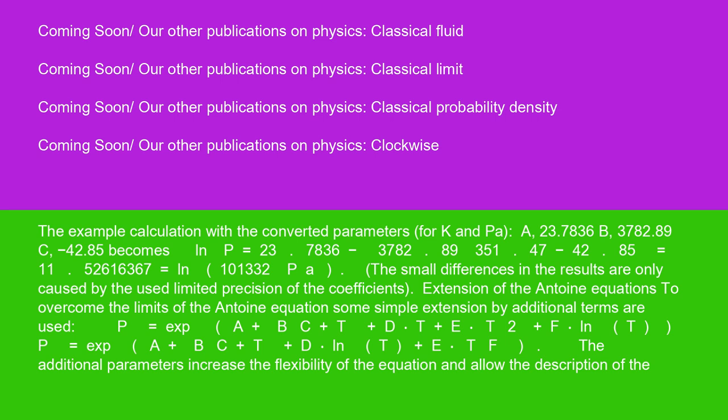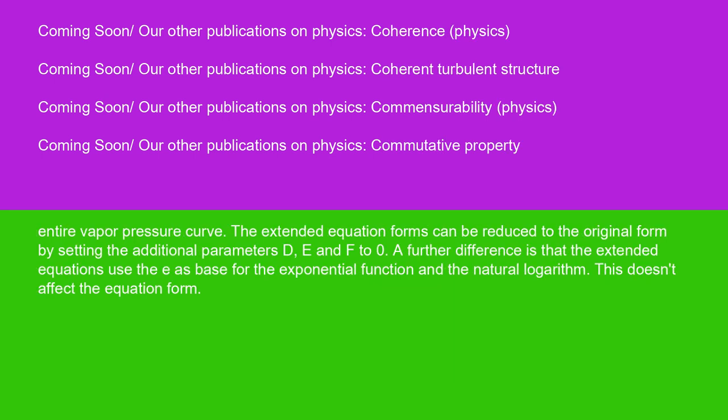P equals exp(A plus B over C plus T plus D ln T plus ET^F). The additional parameters increase the flexibility of the equation and allow the description of the entire vapor pressure curve.